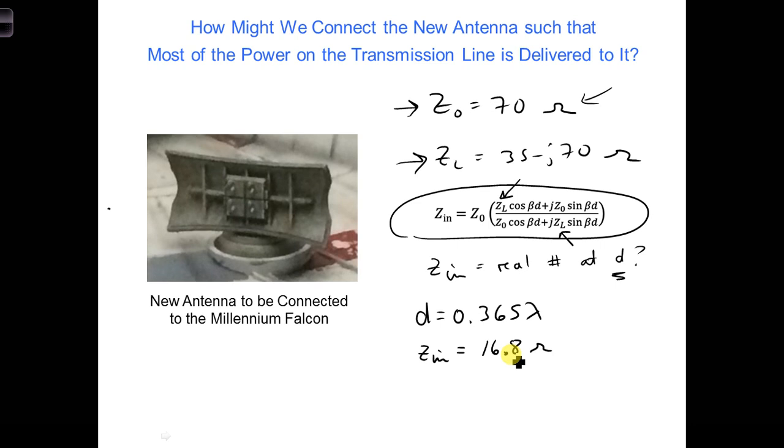Of course, this doesn't equal Z naught yet, which is 70 ohms. So let's go back to our equation, this ZN equation.